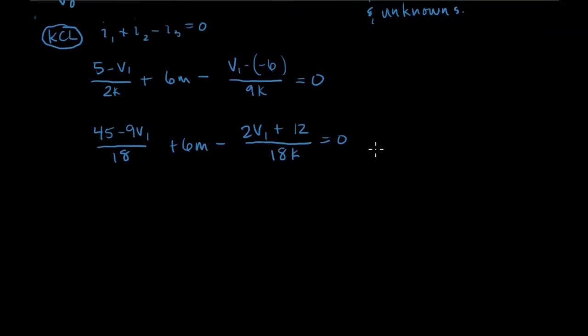Now we'll just remove the 18K by multiplying through by 18K. So I'll multiply everything in this equation by 18K. That will just cancel this K out here and this K out here. And then I need to multiply it by the 6M. So the M and the K will cancel and that's 108.